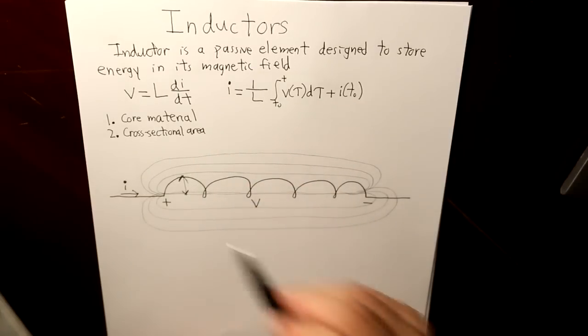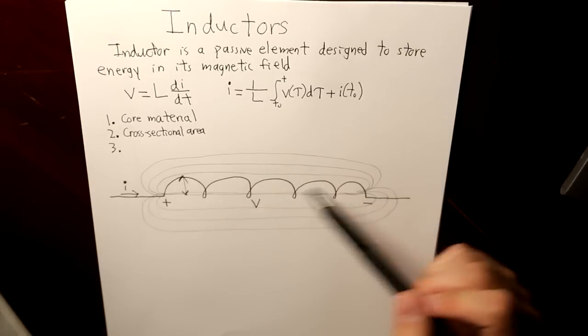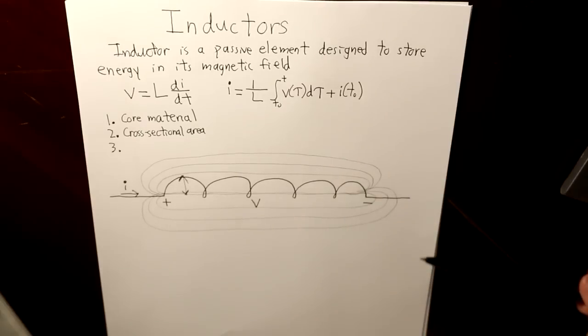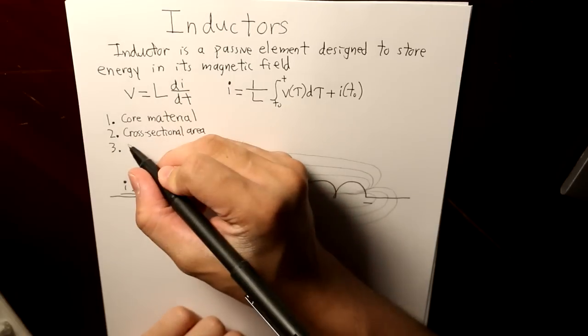The third characteristic is the number of turns in the coil. So if you have more turns, then the inductance is greater. It's able to store more energy. Number of turns.